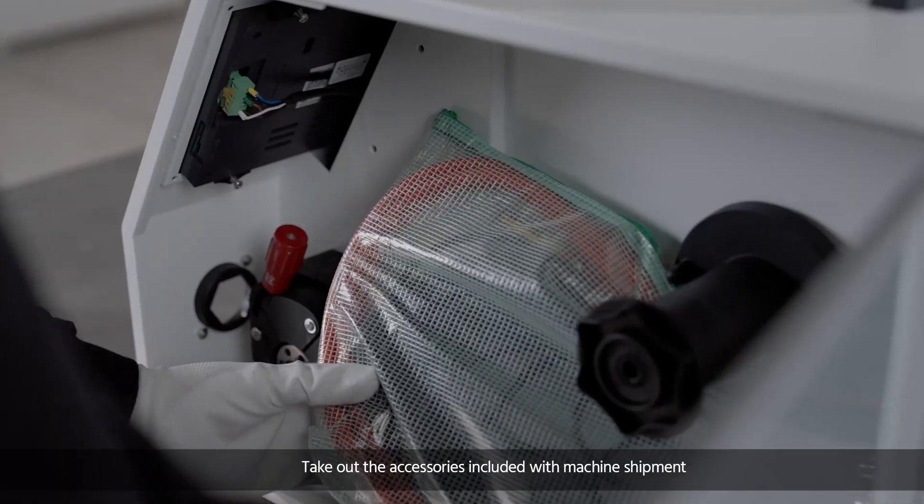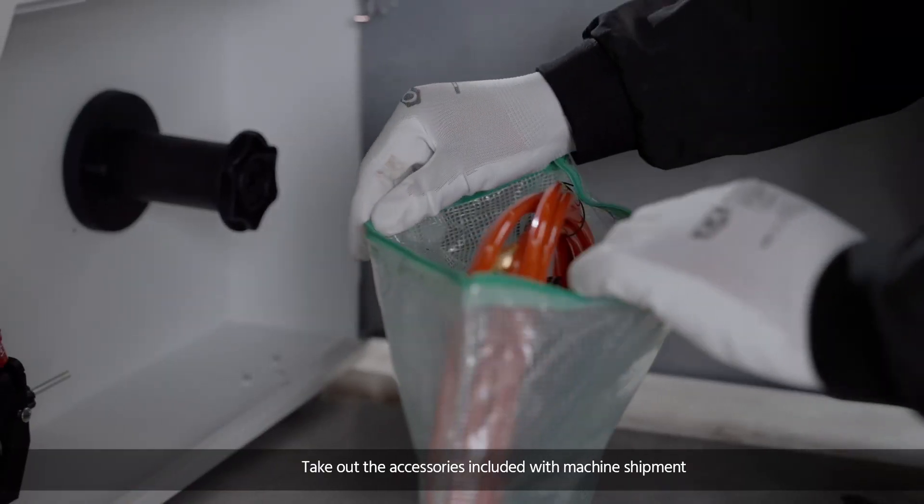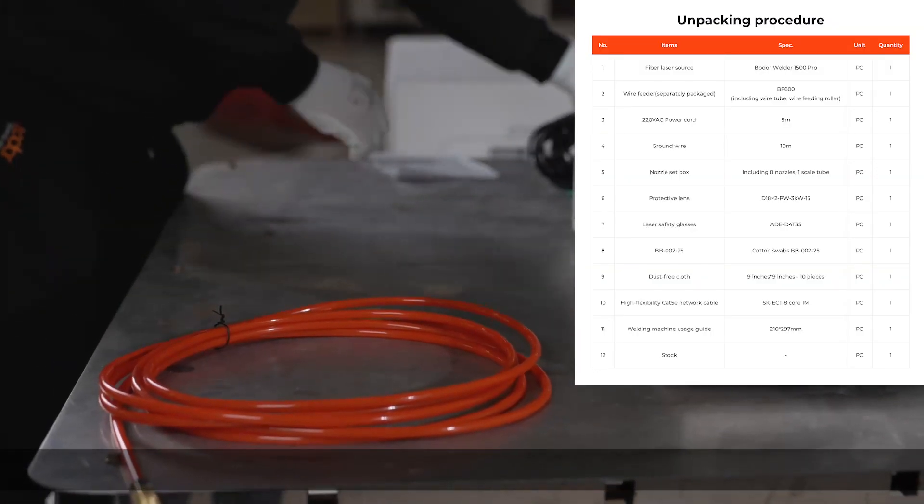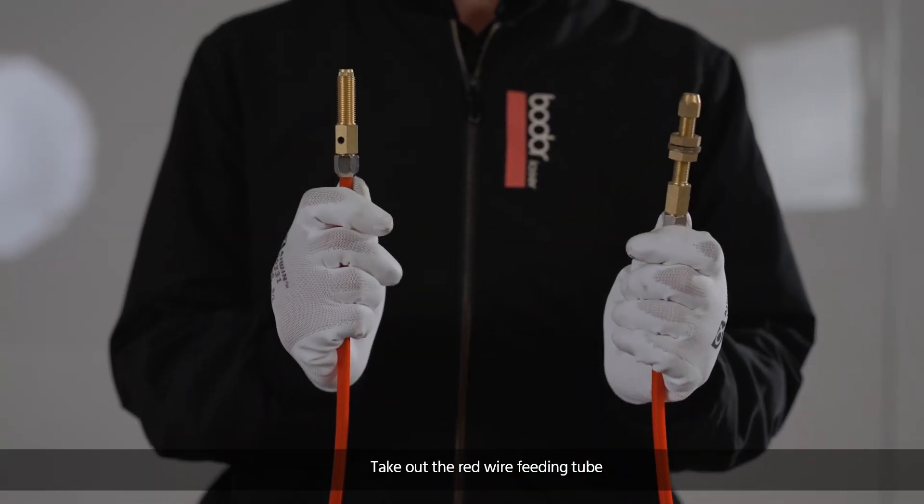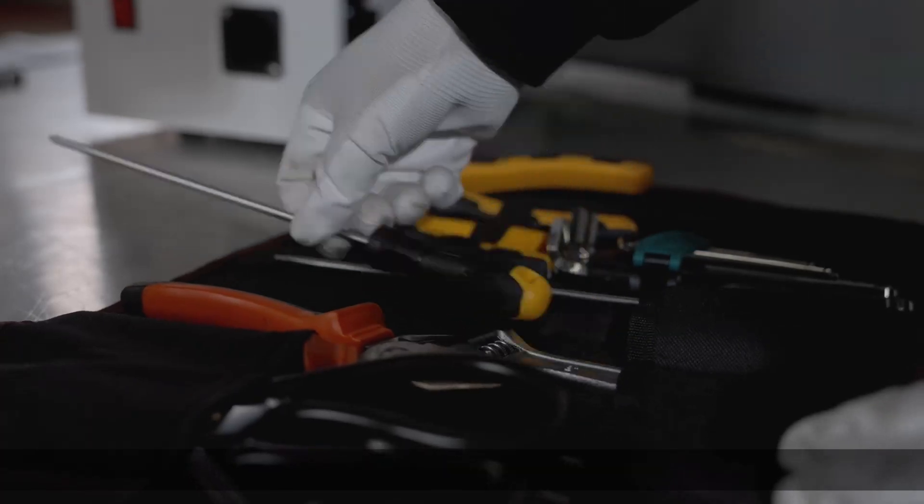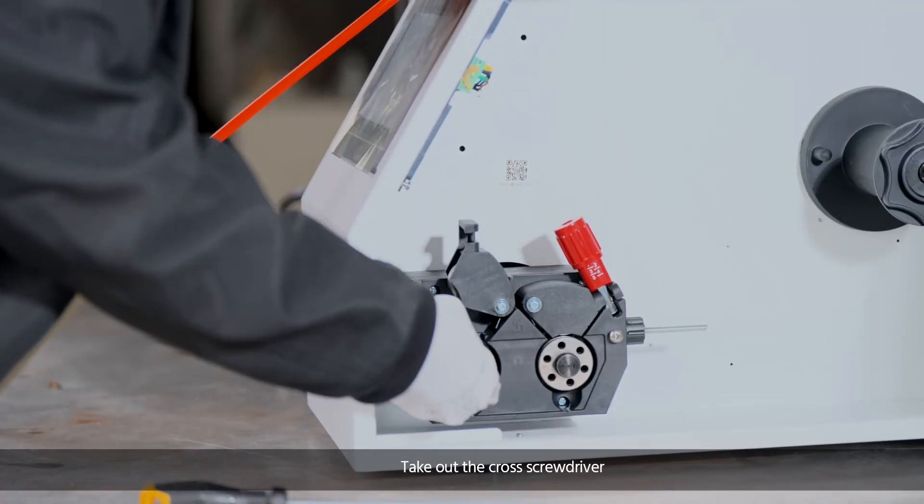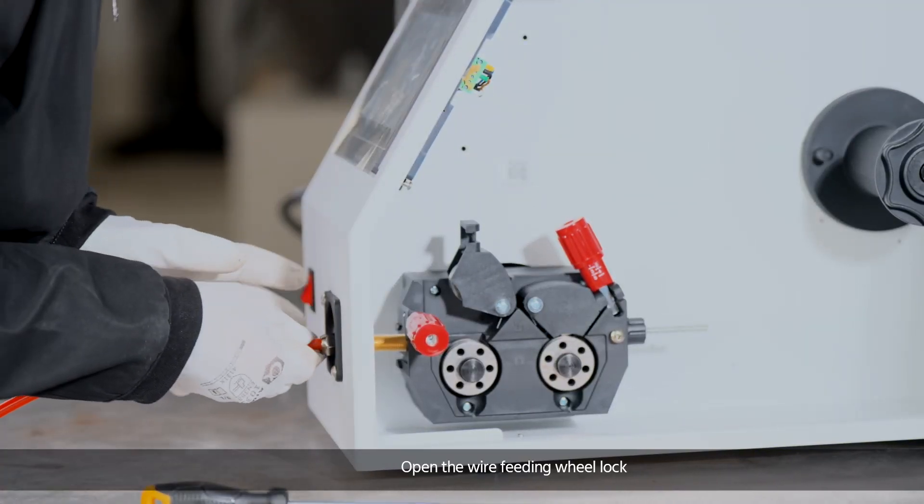Take out the accessories included with machine shipment, take out the red wire feeding tube, take out the cross screwdriver, and open the wire feeding wheel lock.